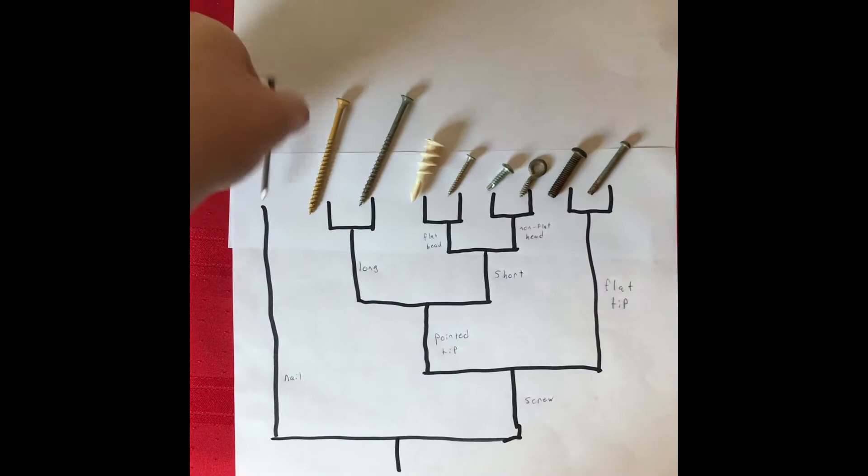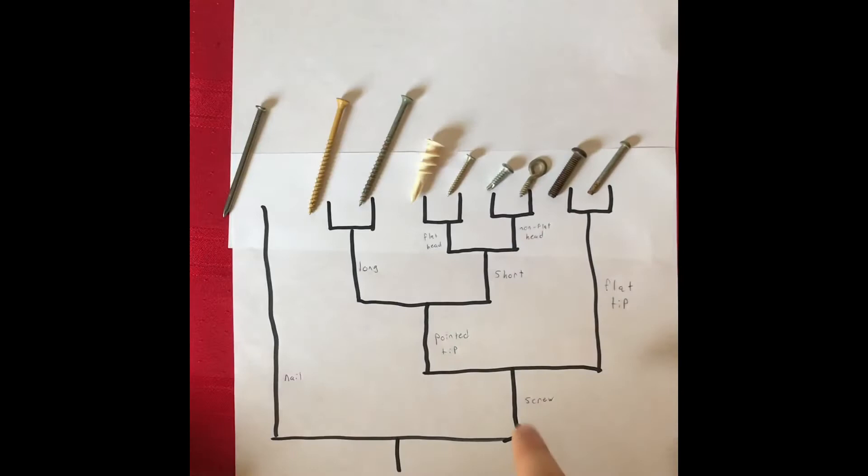The earliest divergence was between nails and screws, making nails our outgroup. This is because the nails have no threads, unlike the rest of the screws.